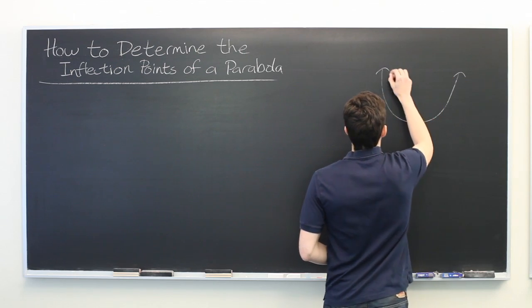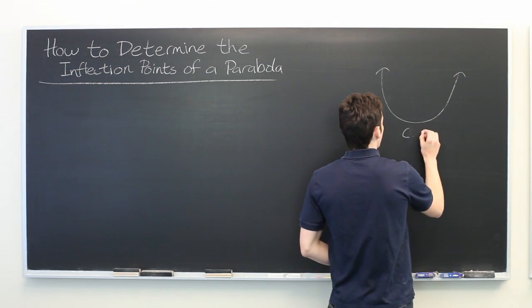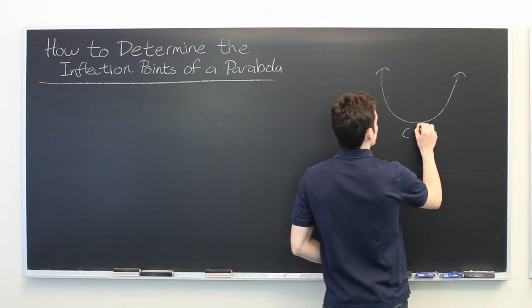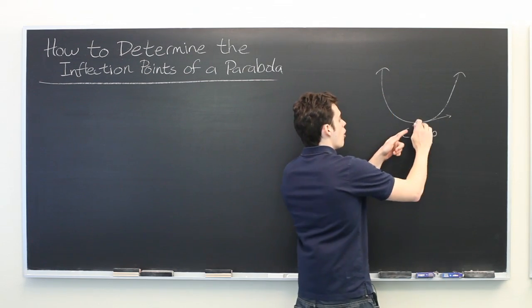Roughly speaking, a graph is said to be concave up if it opens upwards, or if the tangent lines of the graph fall below the graph.